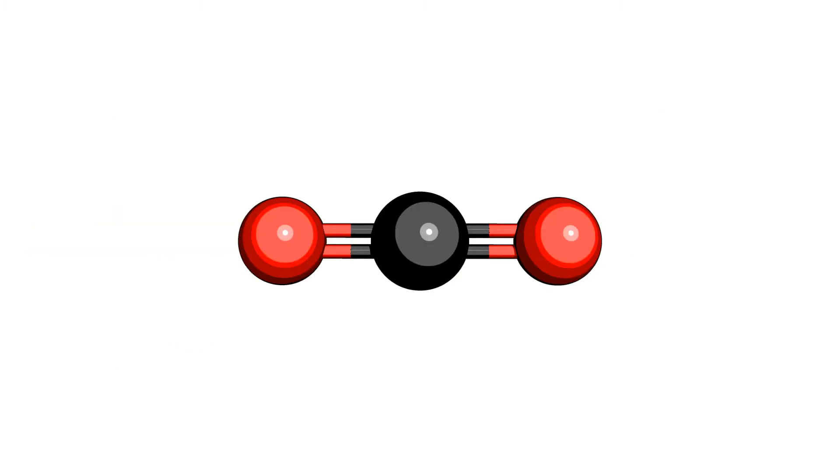We can understand these rules in terms of electron pair domains, or areas where electrons are most likely to be found, such as the double bonds in this carbon dioxide molecule. Here, the repulsion of the bonds is minimized because they are 180 degrees apart or directly opposite.